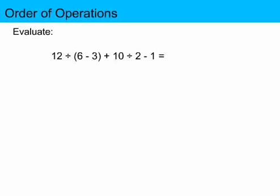So in this question there are several different operations to complete. The first thing we're going to do is write down our acronym to remind us of the correct order. And let's start with the parentheses. We need to complete what's in the parentheses first. So I'm going to do that step first. And six minus three is three. So then I will rewrite the entire equation with that result. So I end up with twelve divided by three plus ten divided by two minus one.